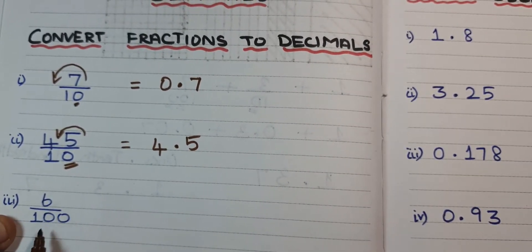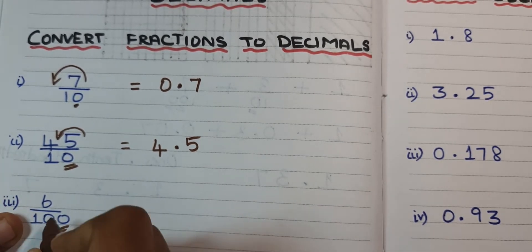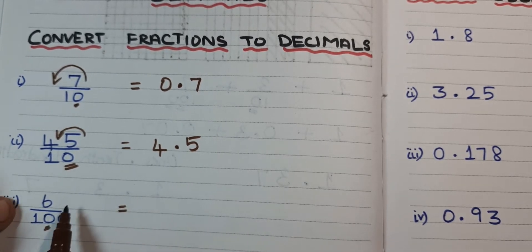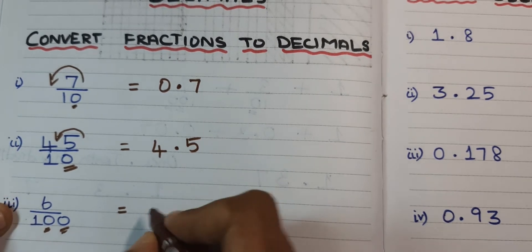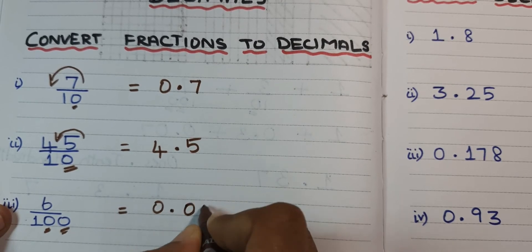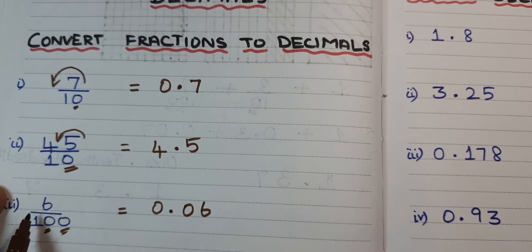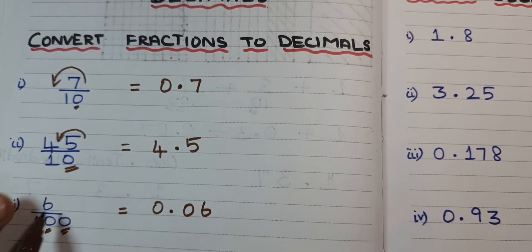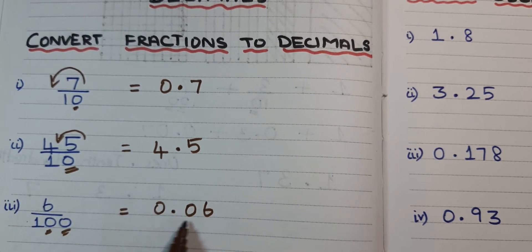Third problem: 6 divided by 100. Here you have two zeros, but the digit I have is only 6 — a one-digit number. Listen: if there is no digit on the left of the decimal, you can place a zero there. Two zeros means I have to place the decimal before two digits, but I have only one digit, so I place a zero in front — the answer is 0.06.